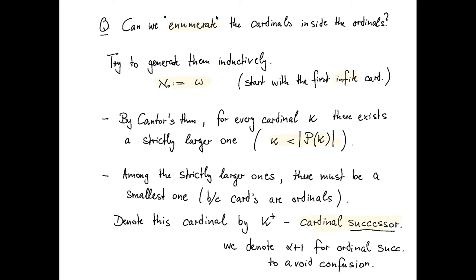So this is the cardinal successor, kappa plus. Before, we denoted also the ordinal successor by this superscript plus, but those two operations are not the same. If I go ordinal successor from omega, I get to omega plus one, which is not a cardinal. So we use, from now on, alpha plus one for ordinal successor to avoid this confusion. Kappa plus, the superscript plus from now on, will always denote the cardinal successor.